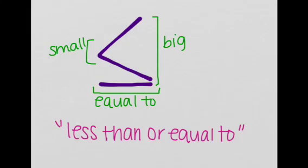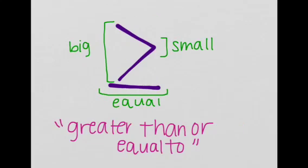And the equal to is noted with a single straight horizontal line below the less than symbol. The same goes for the greater than or equal to symbol. It's basically the greater than symbol on top of a horizontal line that signifies the equal sign.